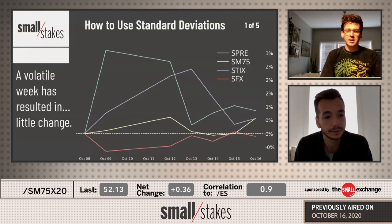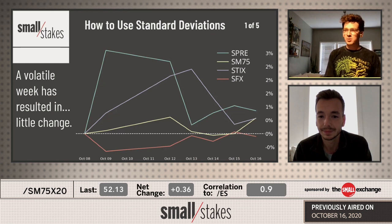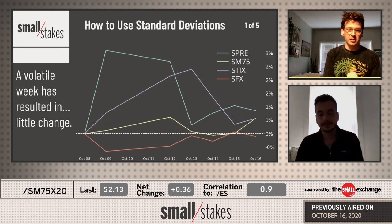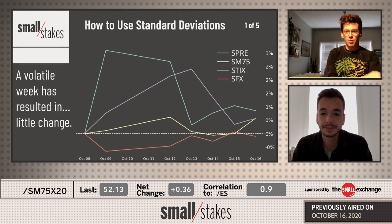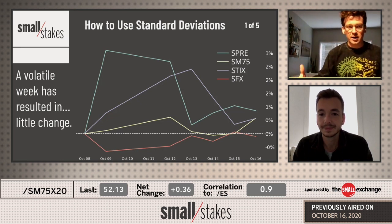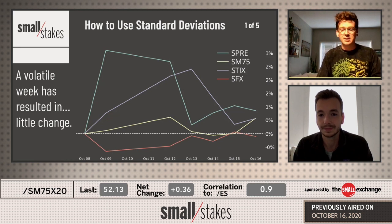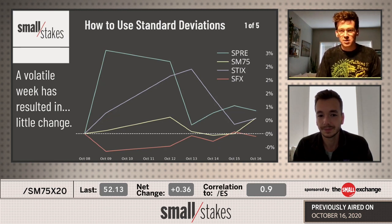And so what does that all mean — we'll get to in a second. But I just want to highlight last week. For people who utilize standard deviations in trading, this is a beautiful thing. You've got four markets: metals, two variations of equities — with the SM75 being a broad equity market index that includes energies, financials, industrials, materials, and tech — then the tech market specifically in purple, the sticks, and a currency market there in orange.